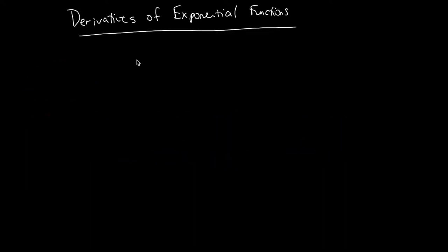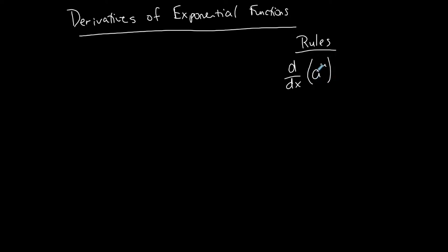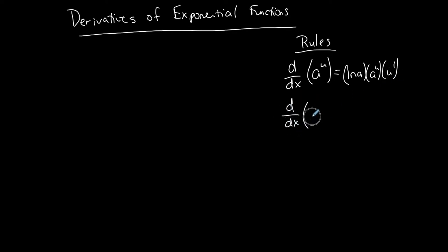Let's do some examples of derivatives of exponential functions using the following rules. The derivative of an exponential function of base a, where a is any number and u is an expression of x, is ln(a) times a^u times u prime. If the base is e, it simplifies to just e^u times u prime.